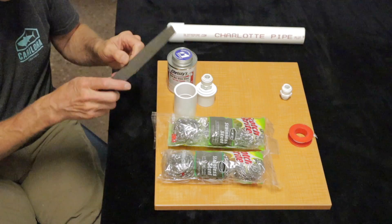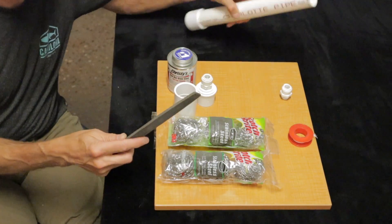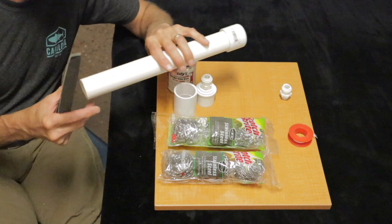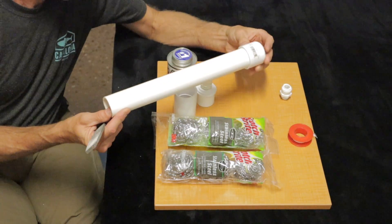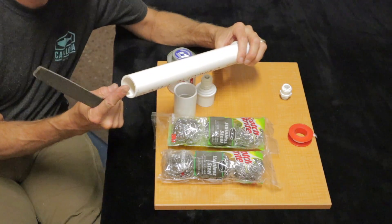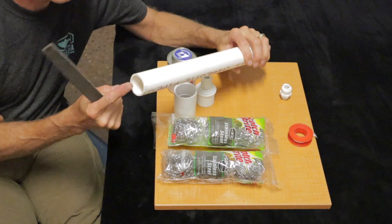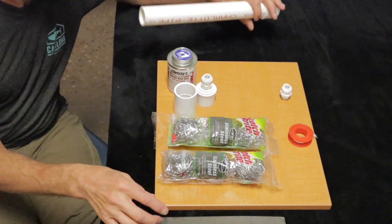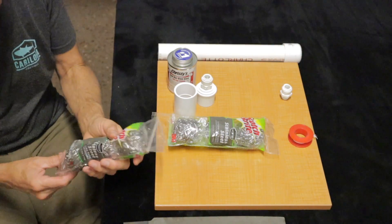The other thing you're going to need is, I just have a file, an old file, but you're going to need something to push the pot scrubbers down into your wand. And so I just happen to have a file handy, but an old broomstick handle works pretty good too. That's actually about the best I've found. And so when we put them in there, let me take them out and I'll show you.